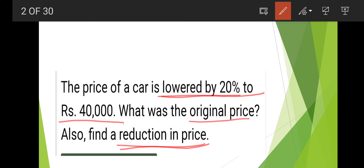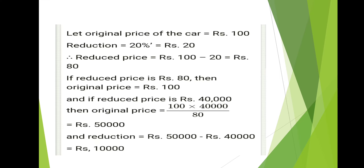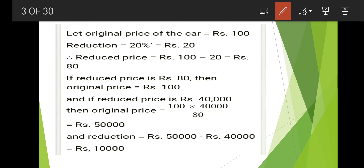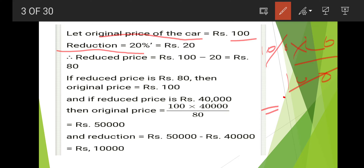Here is the solution. Let the original price of the car be rupees 100 and reduction is given 20%, means rupees 20. Because 100 into 20% gives 20. So the reduced price will be 100 minus 20, that is 80. And if reduced price is 80 then the original price is 100.